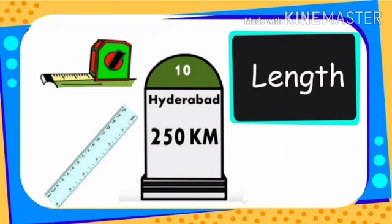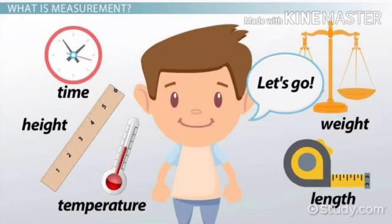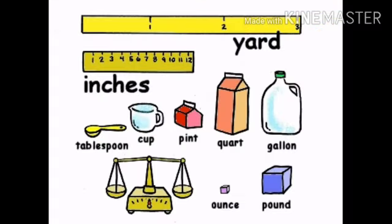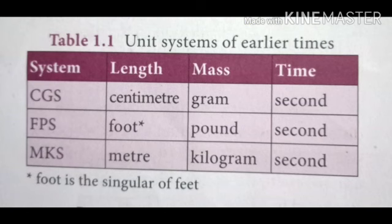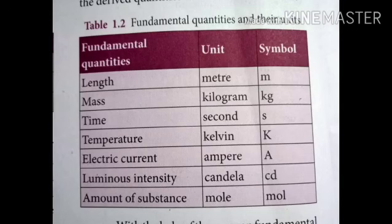Units also follow with physical quantities. 1 liter of milk means liter is the unit. 1 kg potato means kg is the unit. 1 meter plot means meter is the unit. In earlier times, length, mass, and time were measured using the CGS system, FPS system, and MKS system. CGS means centimeter, gram, second. FPS means foot, pound, second. MKS means meter, kilogram, second.